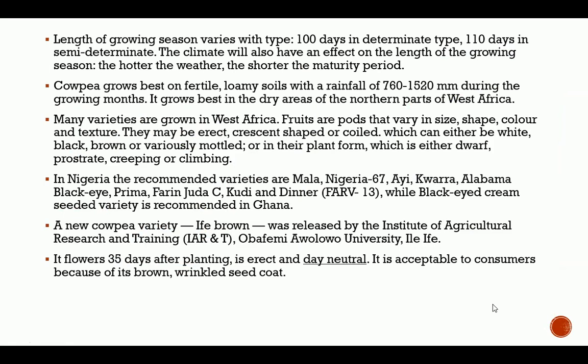The length of the growing season varies with the type of cowpea: 100 days for the determinate type and 110 days for the semi-determinate. The determinate and indeterminate types differ from each other, while semi-determinate types share similarities of both. The climate also affects the length of the growing season, altering the weather and shortening the maturity period.